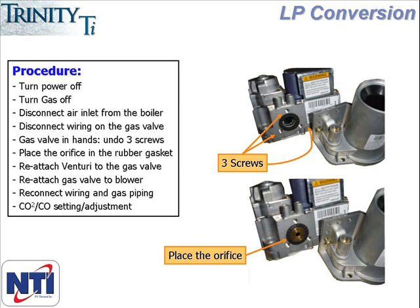You then need to disconnect the wiring from the gas valve. To make the conversion, you will see three screws that attach the venturi tube on the air inlet to the gas valve. Using the torx bit included in the kit, remove the three screws while taking care to hold onto the gas valve.